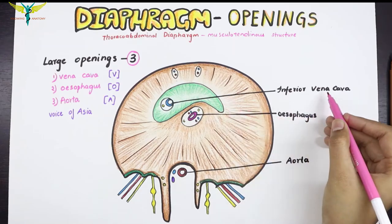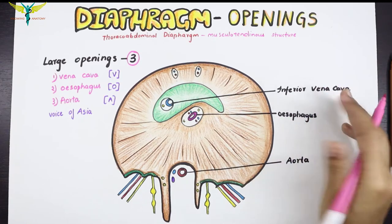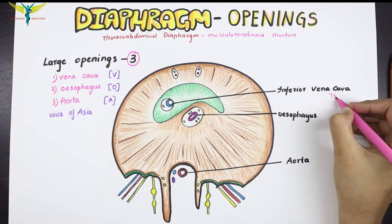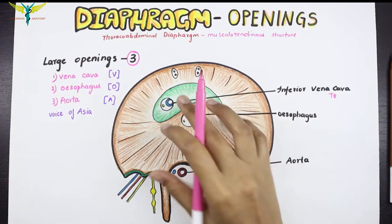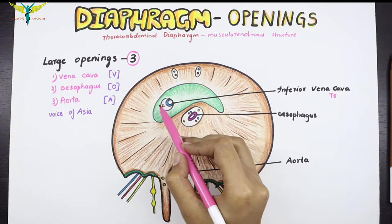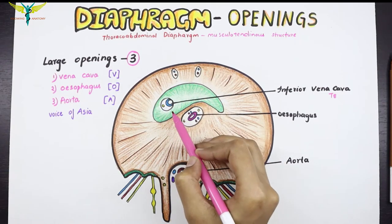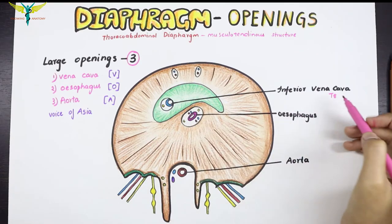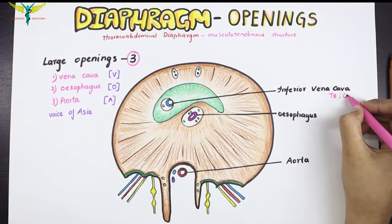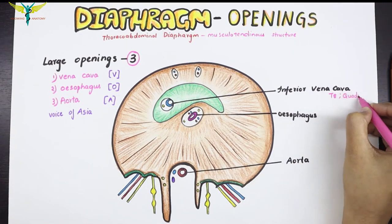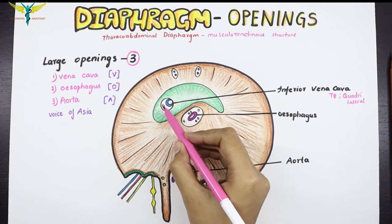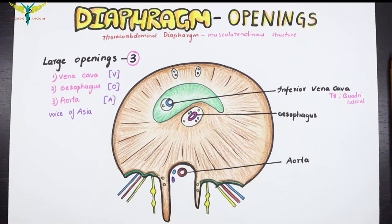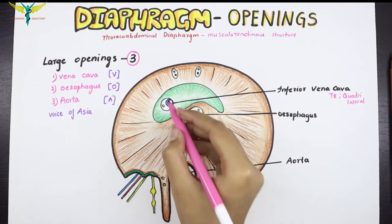The vena caval opening is situated at the T8 level at the right-sided junction of the central tendon. The aortic opening lies here and the shape of the aortic opening is quadrilateral. Through the vena caval opening, the right phrenic nerve and the lymphatics of the liver also pass.